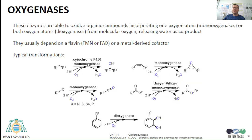In the case of oxygenases, these enzymes oxidize organic compounds, but in this case they incorporate one oxygen atom — in the case of monooxygenases — or both oxygen atoms — in the case of dioxygenases — from molecular oxygen, releasing water as co-product. They usually depend on a flavin or metal cofactor. Monooxygenases can catalyze, among other transformations, the hydroxylation of non-activated substrates, the epoxidation of alkenes, the oxidation of different heteroatoms and carbonyl compounds, while dioxygenases can dihydroxylate aromatic compounds.